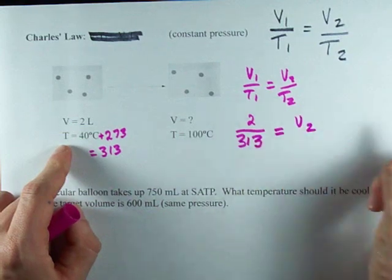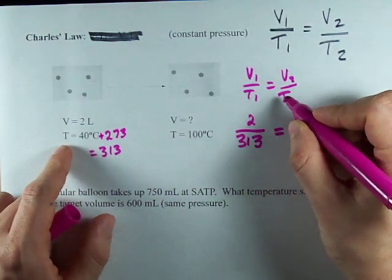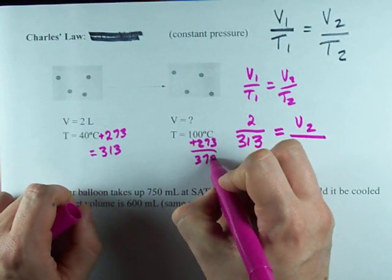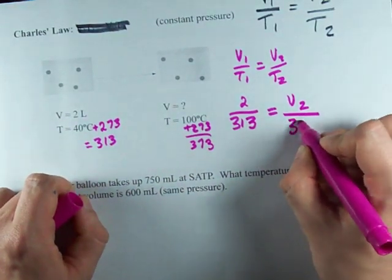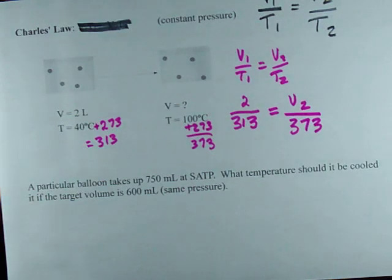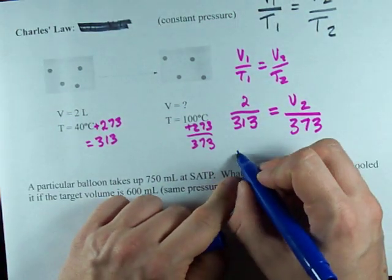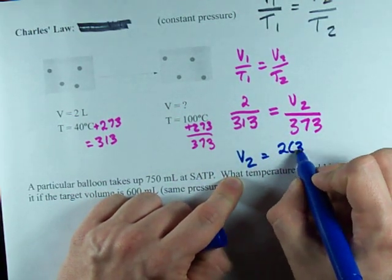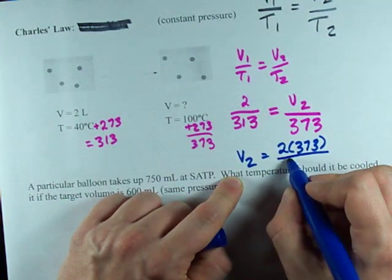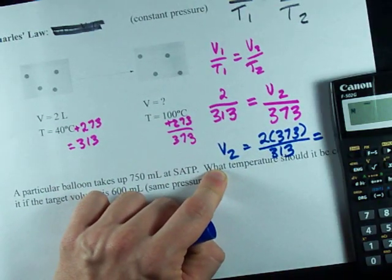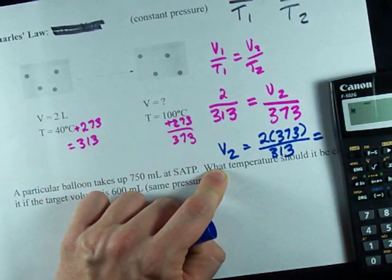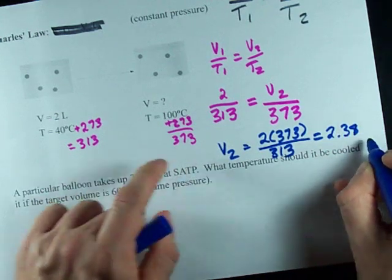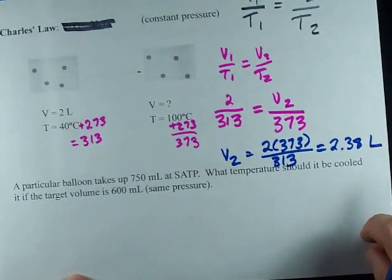I'm looking for my final volume, my V2. And I need my second temperature, which is 100 degrees Celsius. And again, I have to add 273 to that to get it in Kelvin. 373. Now I've just got to solve for V2. To solve for V2, I'm gonna want to undo dividing by 373, so that means I'm gonna multiply by 373 on the other side. Sweet! Let's see what we can do here. 2 times 373 divided by 313, 2.38. And my units for volume were liters, apparently.